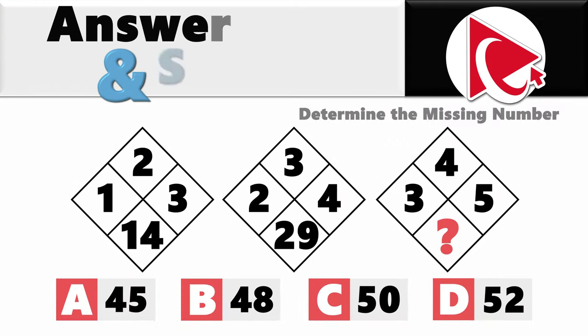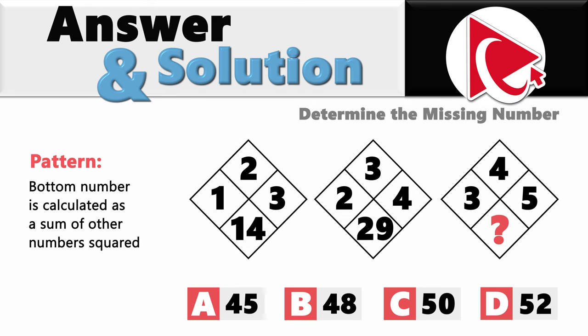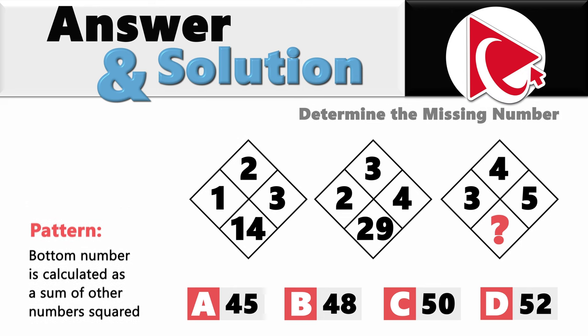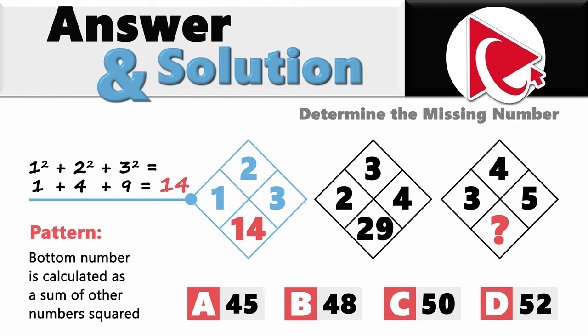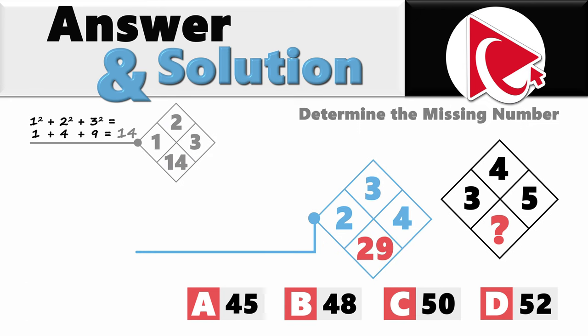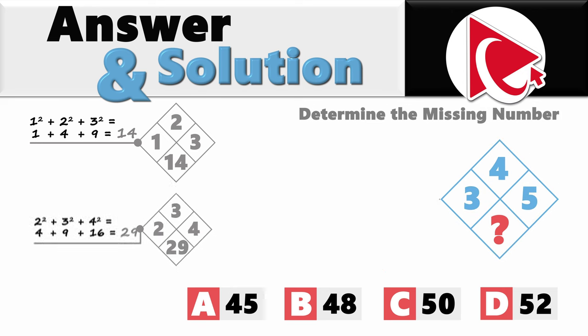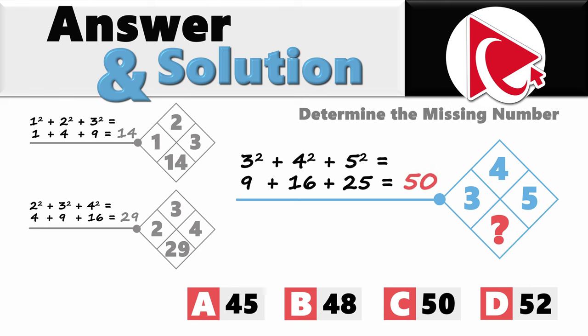The pattern here is that the bottom number is calculated as the sum of the other numbers squared. First diamond: 1²+2²+3²=1+4+9=14. Second diamond: 2²+3²+4²=4+9+16=29. For the missing number: 3²+4²+5²=9+16+25=50. So the correct answer is Choice C, 50.